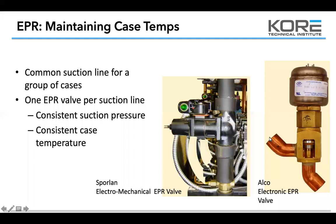This is a picture of an Alco EPR — we see a lot more Sporlan out there, but same concept. It looks at a thermistor, looks at the case through the controller, and has a board that drives that valve. These electronic valves are much more finite — some have thousands of steps — that's how precisely they can run that seat in and out to maintain the temperature they want.